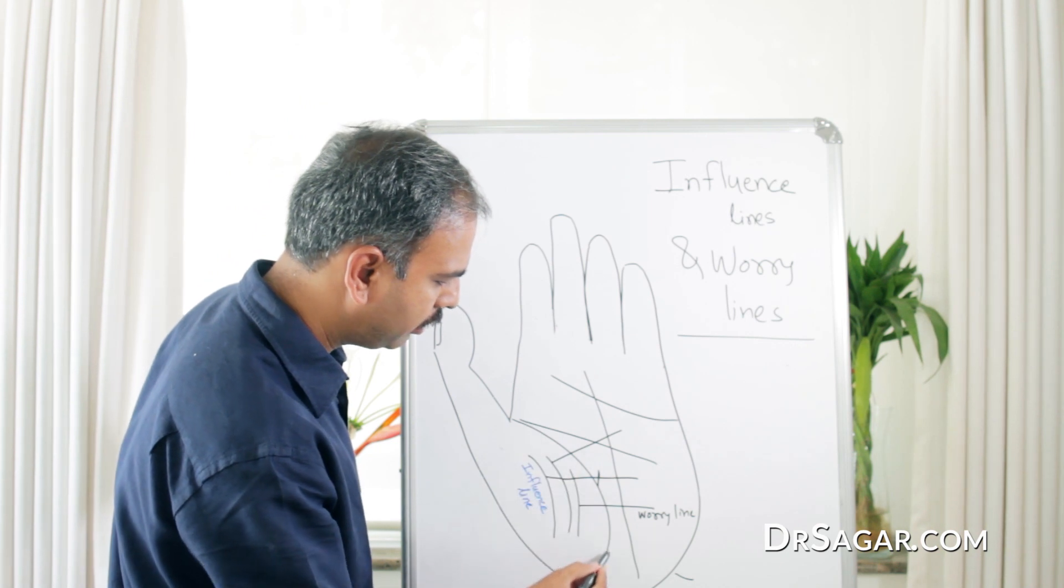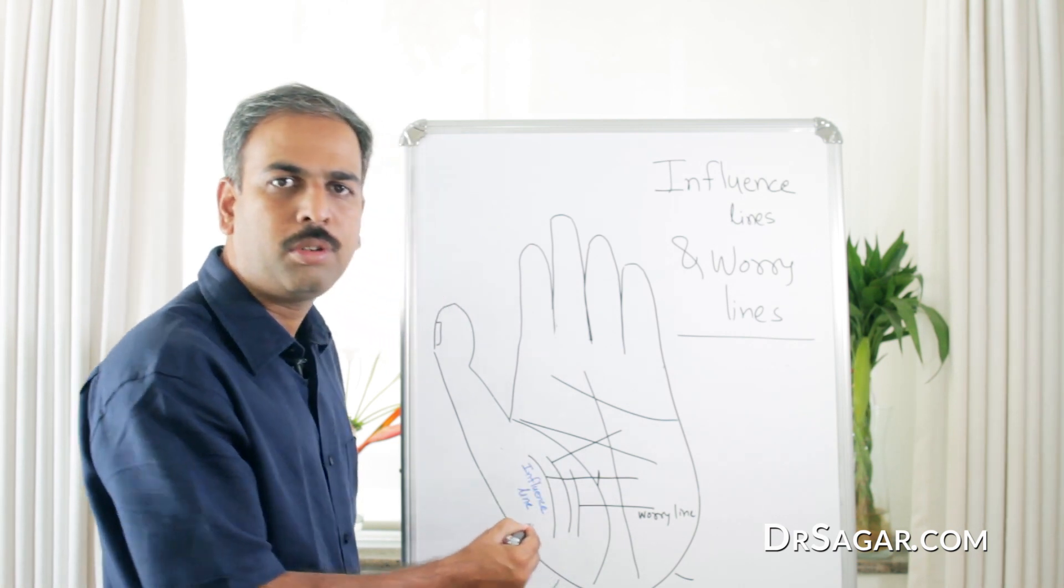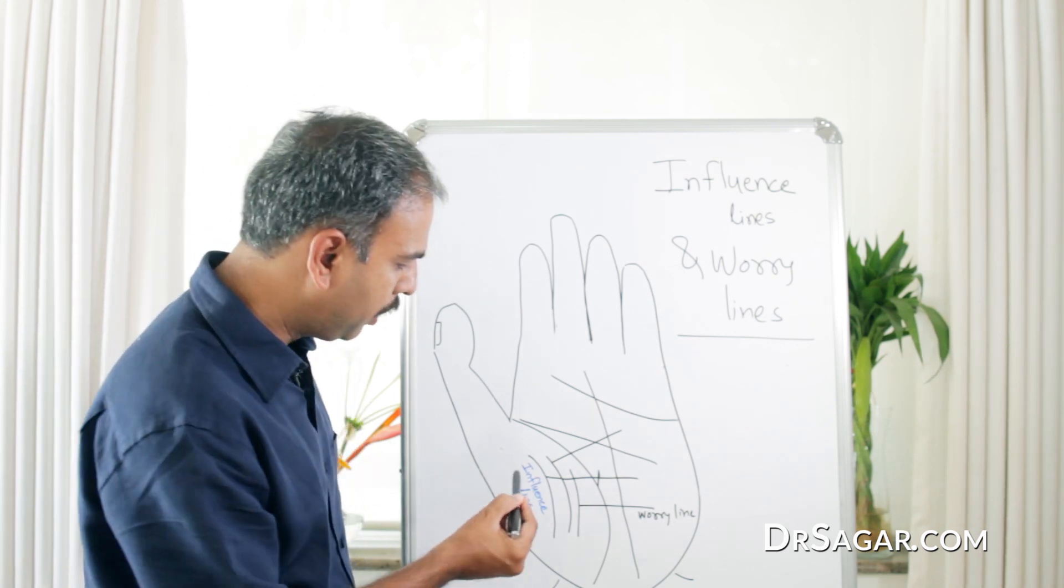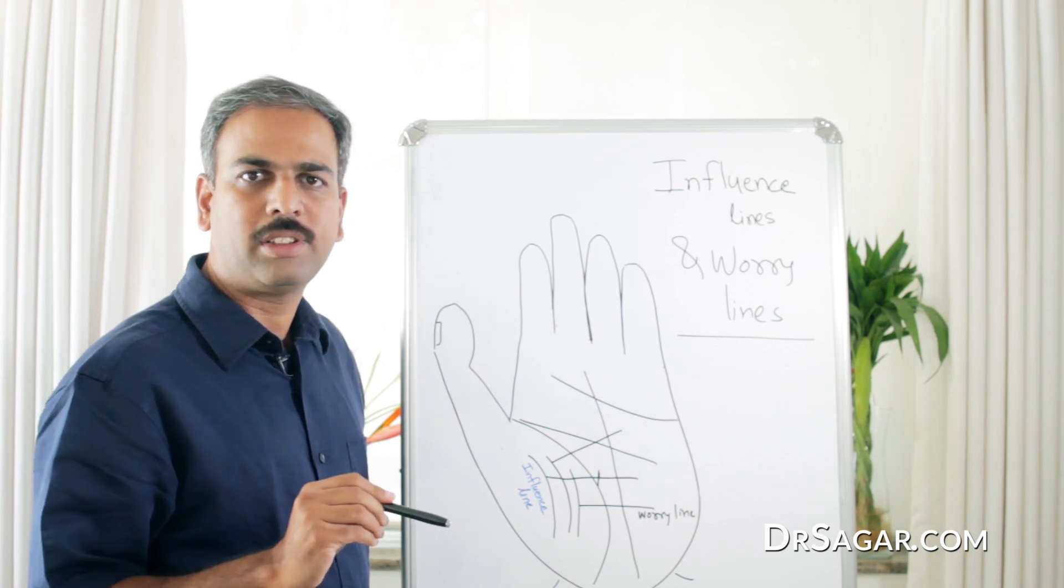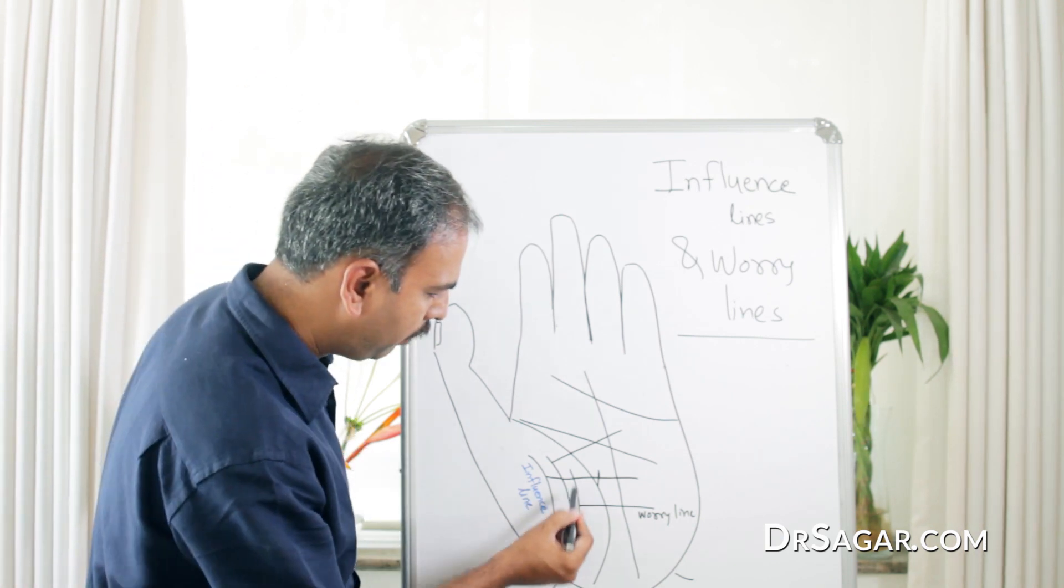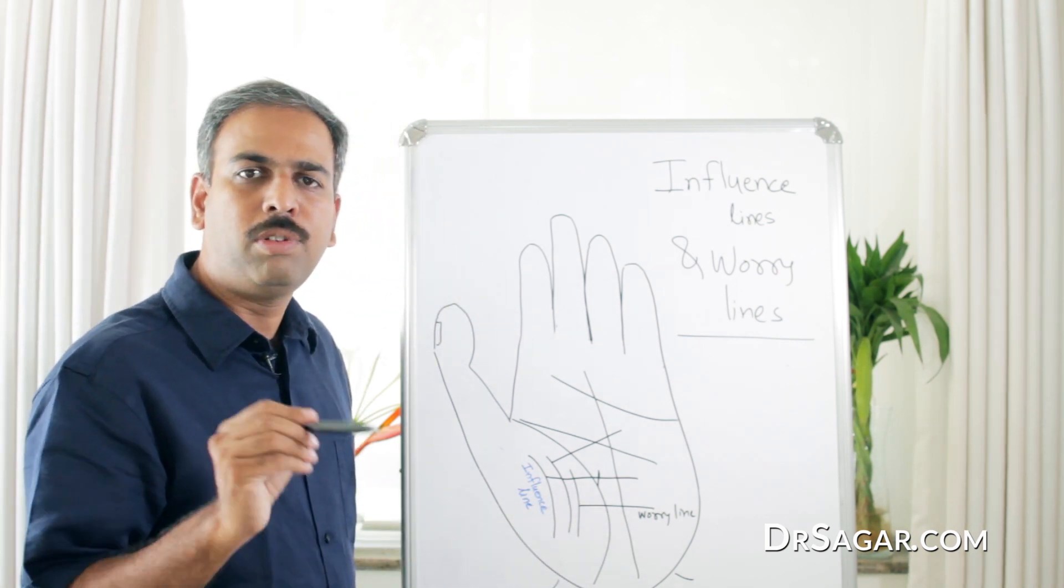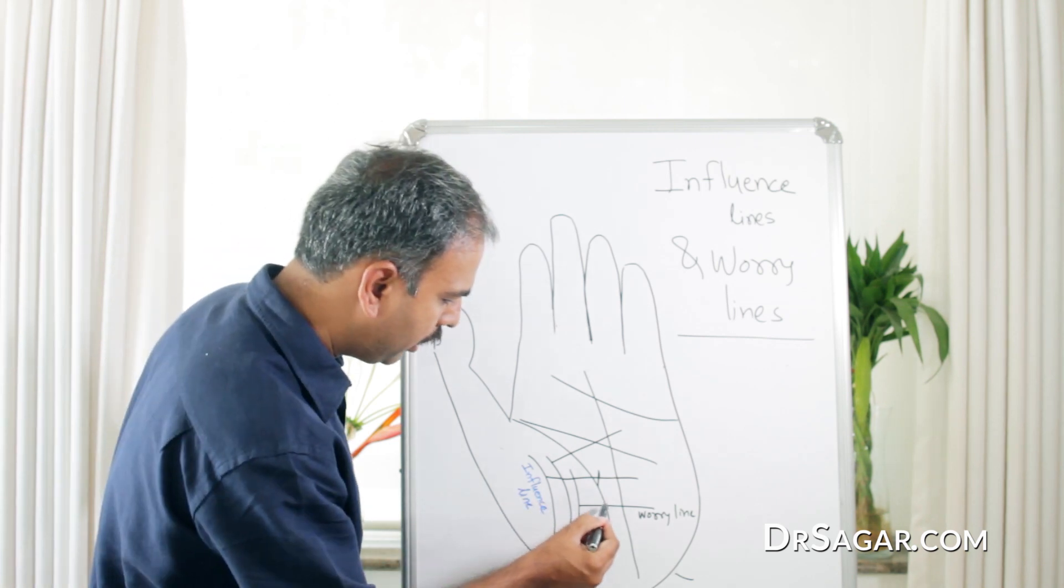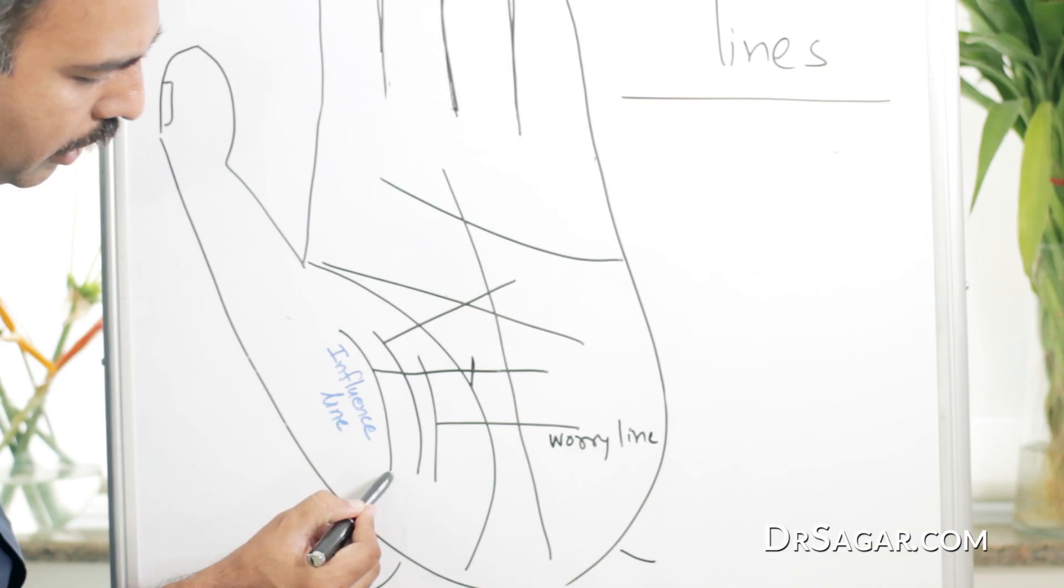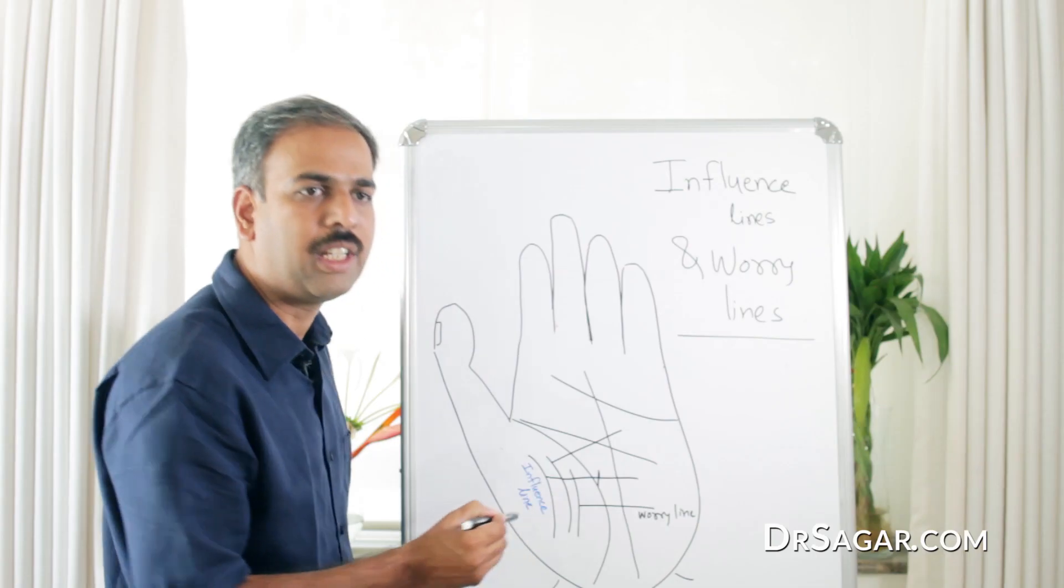This is the Life Line. The lines which are parallel to the Life Line are called Influence Lines. They are called Influence Lines because they influence in terms of persons in your life. If a line is more near to the Life Line, the influence is more. And if it is wide or far from the Life Line, the influence of this line is very weak.